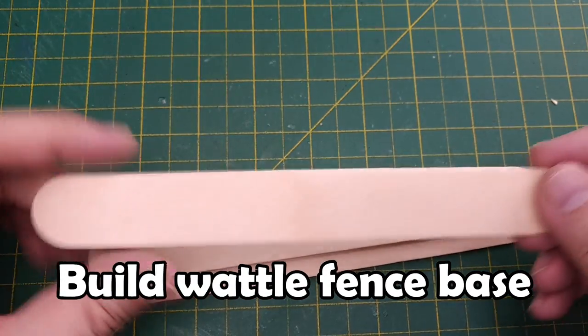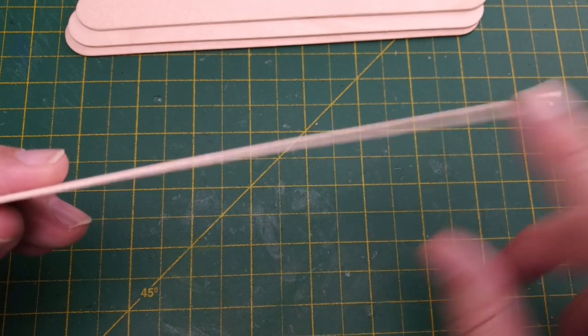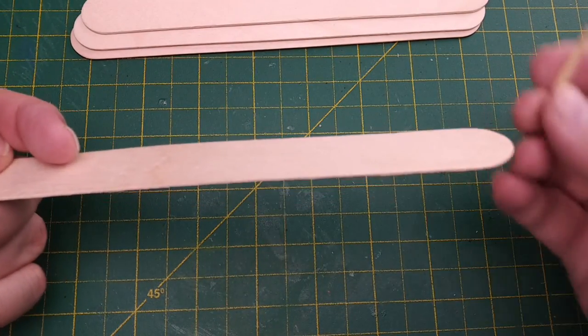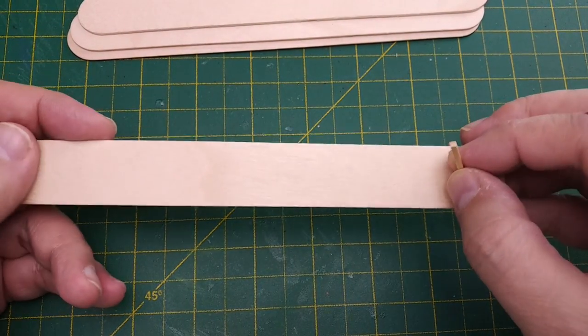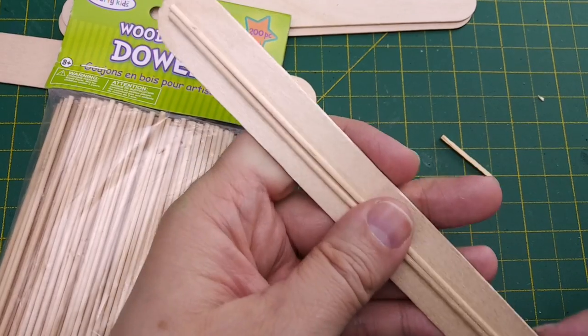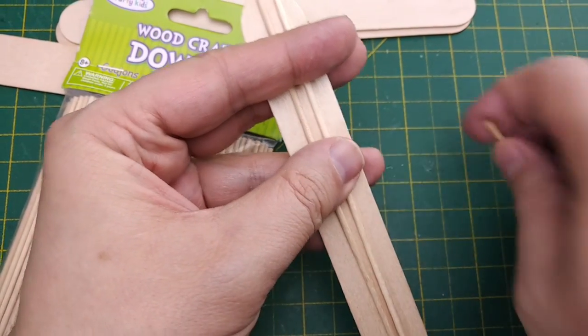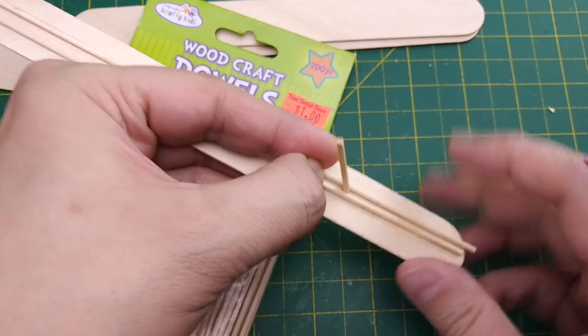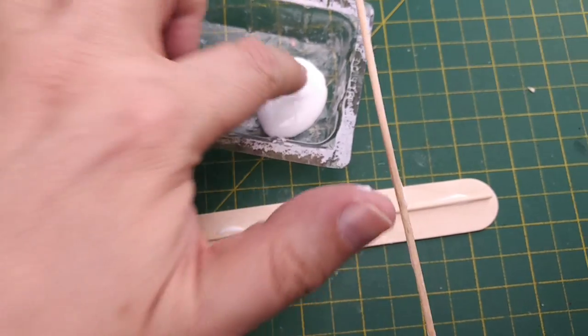For the base of our wattle fence we're going to use the same jumbo craft sticks we did earlier. However these craft sticks are not very thick and bend quite easily. This presents a problem since we need to glue our fence posts directly to the base. We can't drill holes in the craft sticks because it will weaken the structure and likely split the board. At least that's what happened when I tried it. My solution to this problem is to use very thin wood dowels I found at the dollar store. We can use these dowels to create a type of trough on our base so the hold on our fence posts will be reinforced.